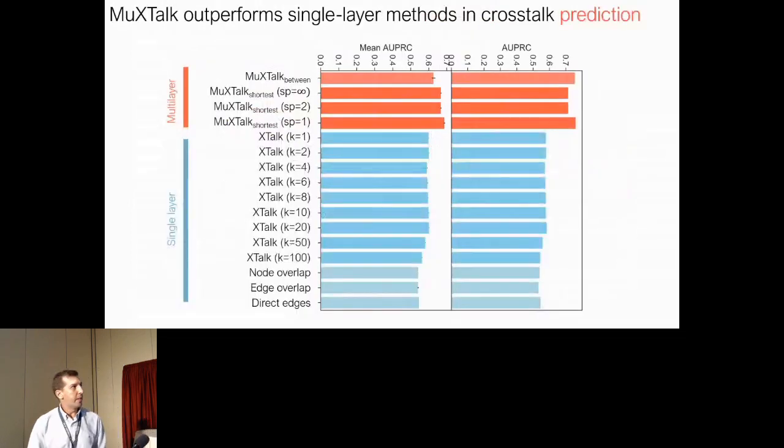To assess the prediction performance of this method, we designed a benchmark that uses gold-standard crosstalking pathways from a literature-curated database. Both versions of our method surpassed four network-based methods in both the stochastic and the deterministic version of the benchmark.